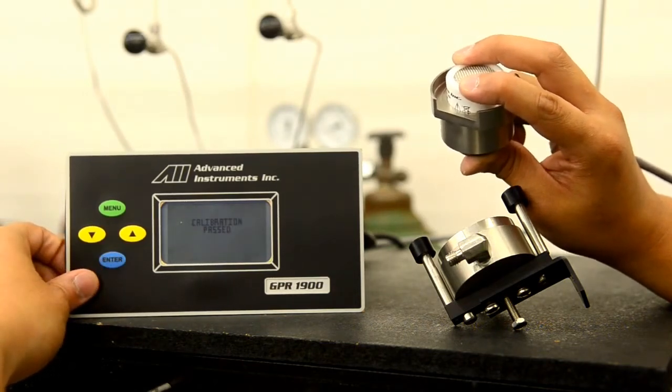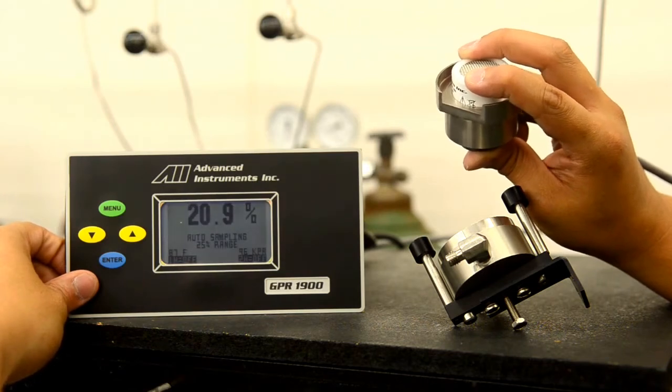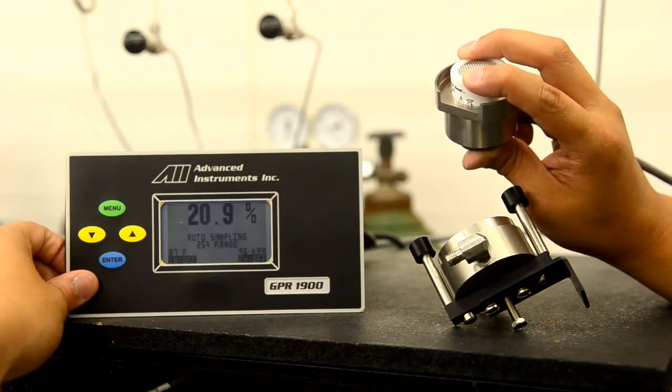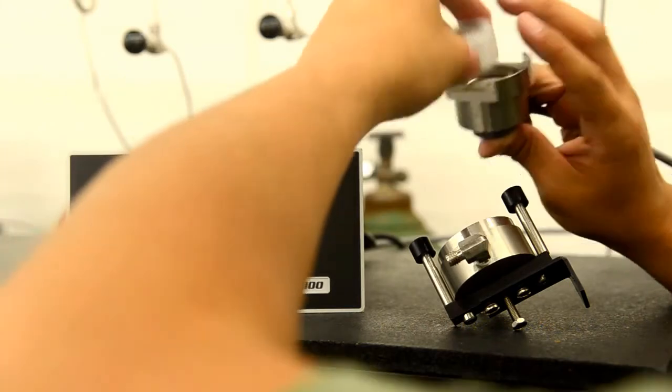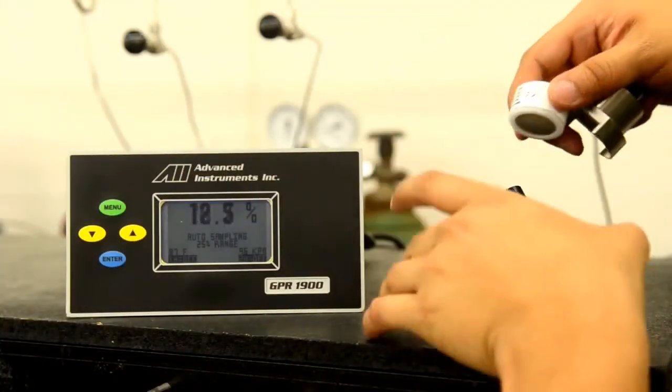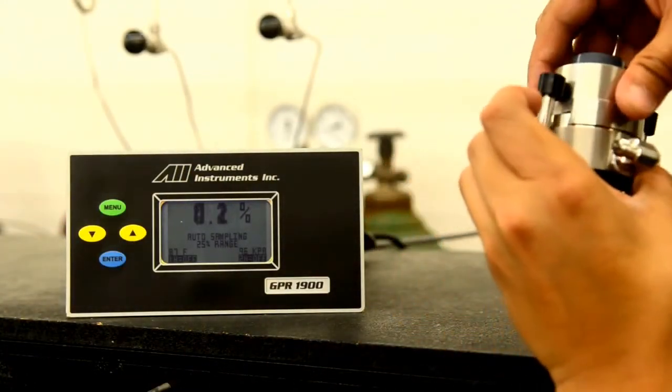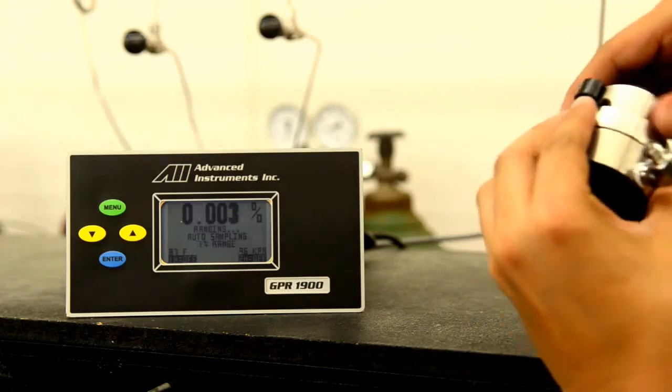Once that has been done, calibration pass menu will appear to ensure you that the sensor has calibrated to ambient air as seen at 20.9%. We will now remove the sensor and run it with nitrogen gas or zero gas as it is a PPM sensor.